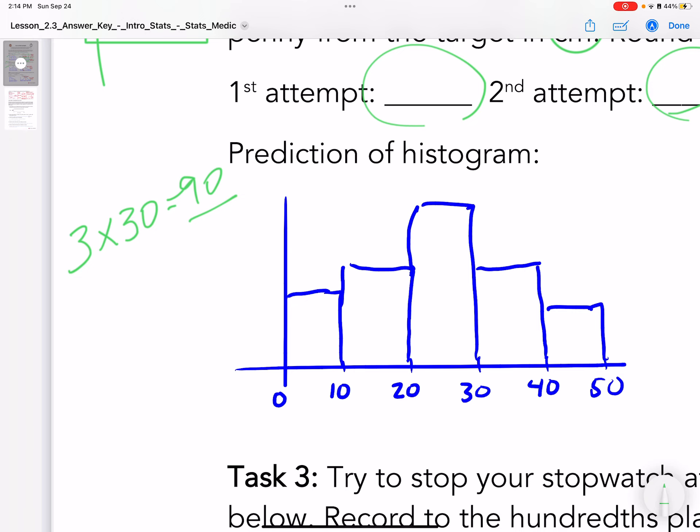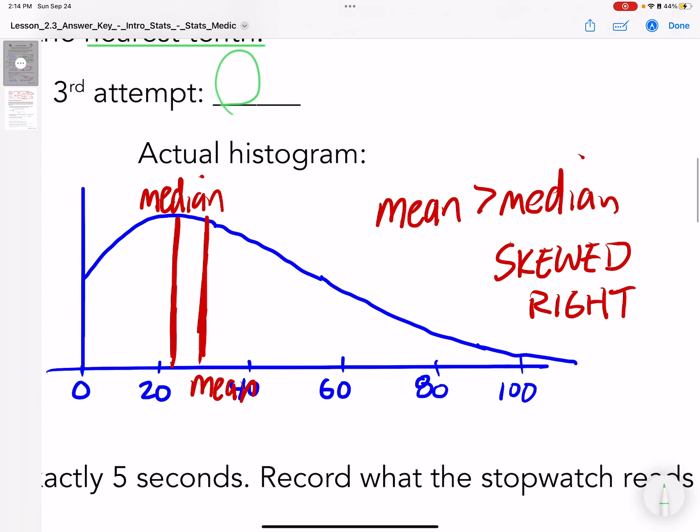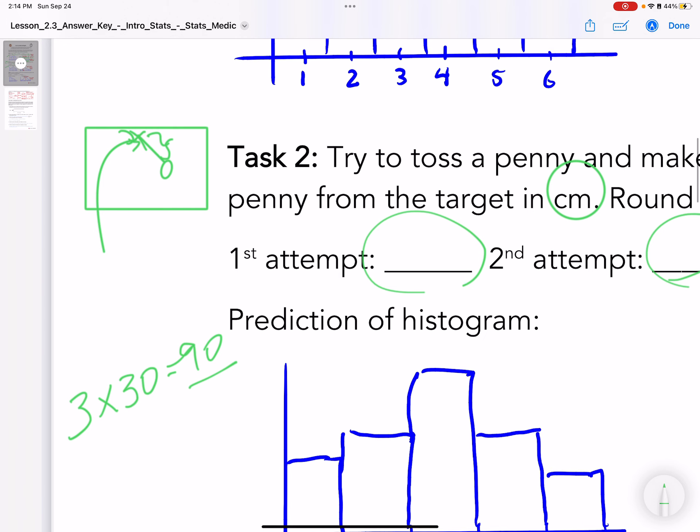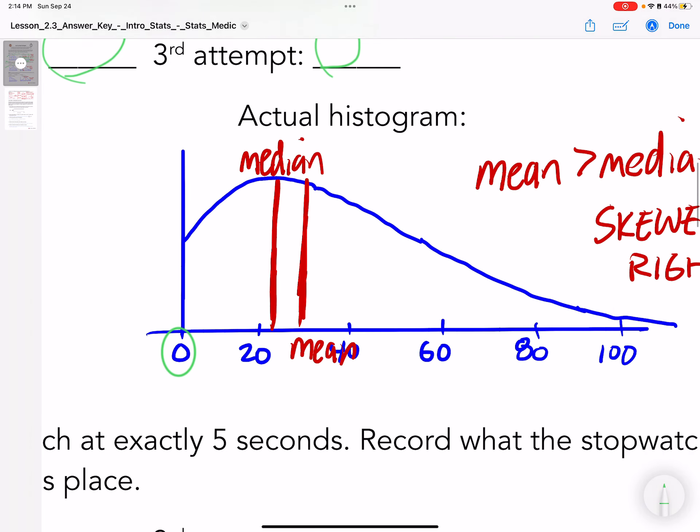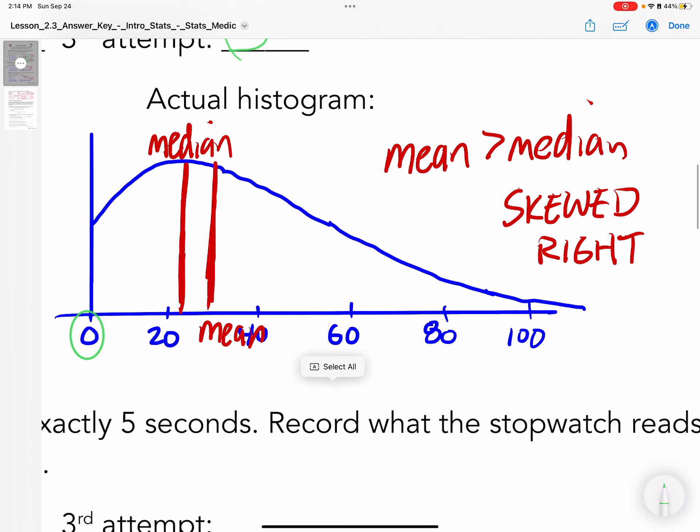The same thing, I asked them to predict with 3 times 30 students, 90 particular flips, what would it look like. The actual histogram looked like this. The reason being is the best, the lowest I can get is zero. Zero is perfect, landing the penny directly on top of the X. Most people we found had somewhere between 20 and 30 centimeters away from our target.